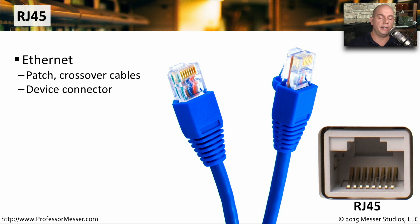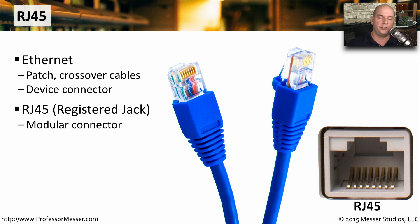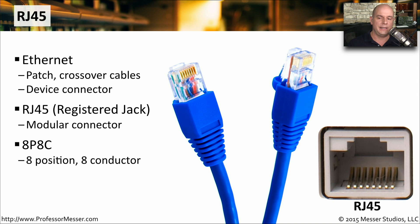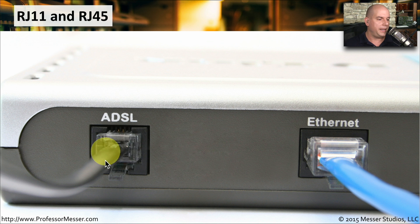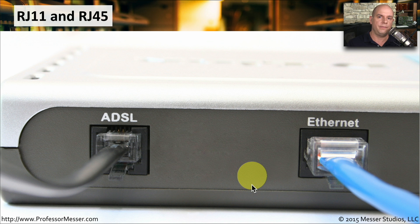The other common RJ connector is RJ45 — Registered Jack number 45 — used primarily for Ethernet patch cables, crossover cables, and copper Ethernet connectivity. It is an 8P8C connector: eight positions using all eight conductors, making it slightly larger than RJ11. Placing them side by side, they look almost identical, but the Ethernet RJ45 is a bit larger. An Ethernet cable won't fit into an RJ11 port, but an RJ11 can be plugged into an RJ45, so you must be careful about which connector goes where.